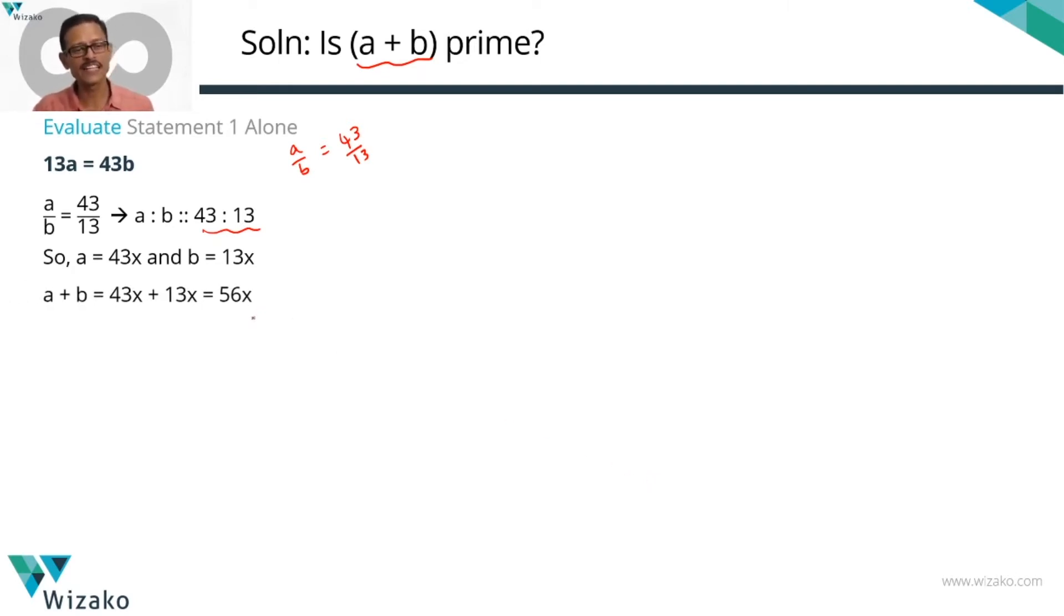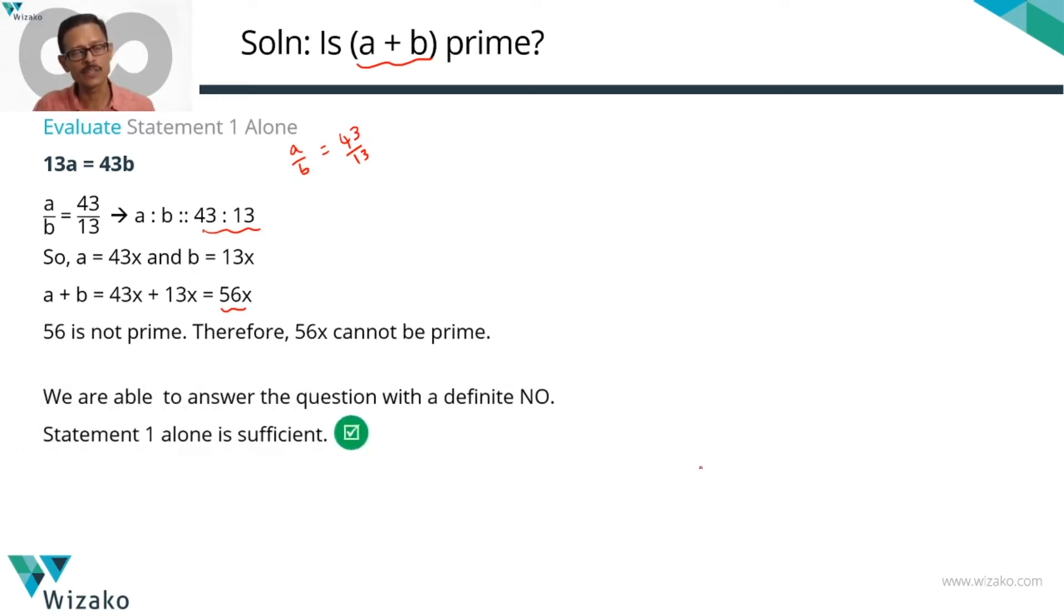x is definitely an integer because a and b are integers. 56 is not a prime number, so any product of 56 is certainly not going to be prime. We can conclude that a + b is not a prime number. Statement one has given us a definite no. Because we got a definite answer, statement one is certainly sufficient. Answer options B, C, E can be eliminated. It is down to A or D.